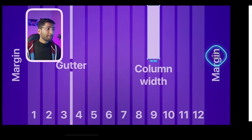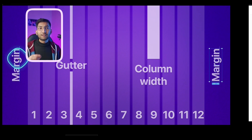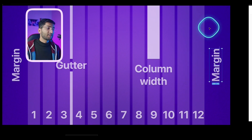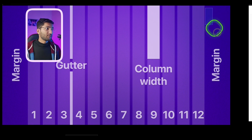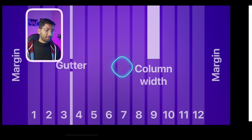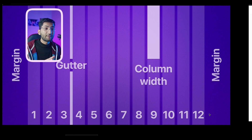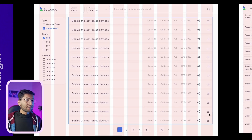The first type is fixed width grids, the second is stretchable grids. Then we have the margin — the empty space on the left and right. We call them the left margin and right margin. We have 12 grids for the PC version, 8 grids for the tablet version, and 4 grids for the mobile version.